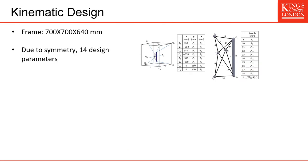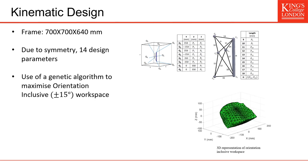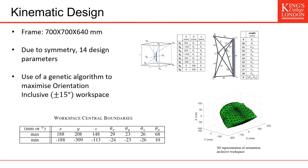Now that we have established our kinematic and static models, we can use those models to improve the design. So we use an aluminum frame of 700 mm wide. And thanks to the symmetry of the design, we only have 14 design parameters to optimize. Eight of those are related to the position of the motors on the frame. And the remaining six are related to the length of the passive cables on the platform. We use a genetic algorithm to maximize an orientation-inclusive workspace. So that is a workspace where you can reach any orientation within a certain range. This was only used for optimization, although, because inside this workspace, you can reach higher angular values. This is a table of the workspace central boundaries.